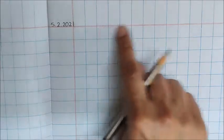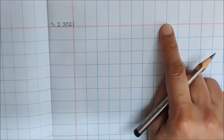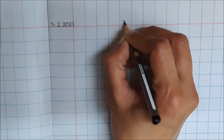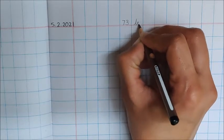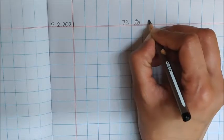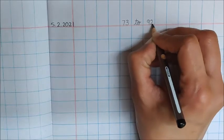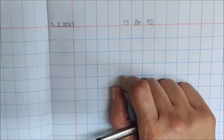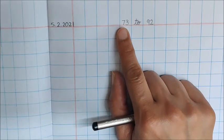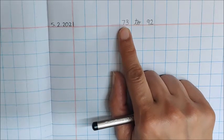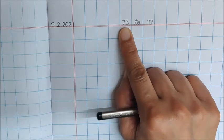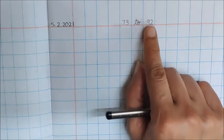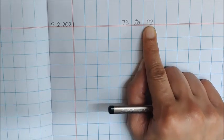Now on the red line write down 73, TO, 92. Today we are going to write numbers from 73 to 92. You will start from number 73 and you will stop at number 92.